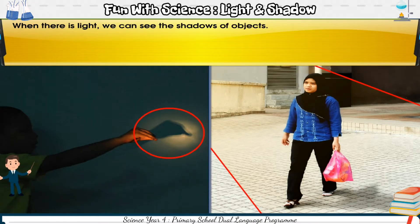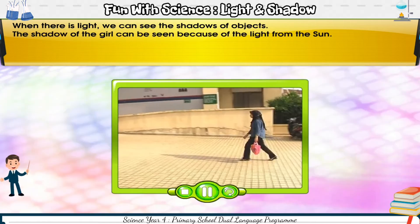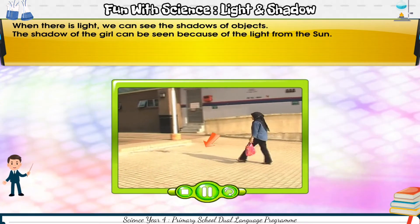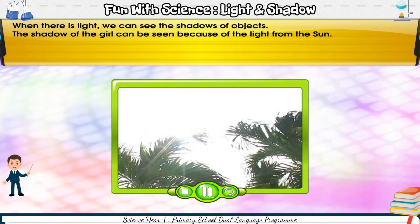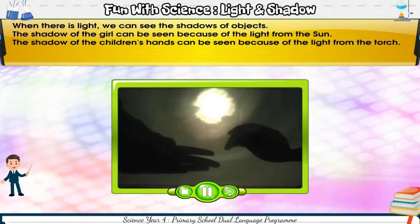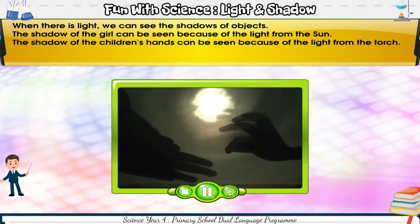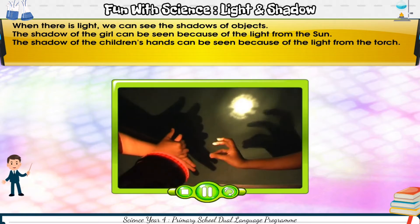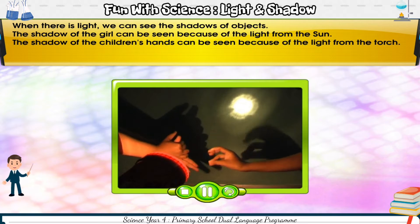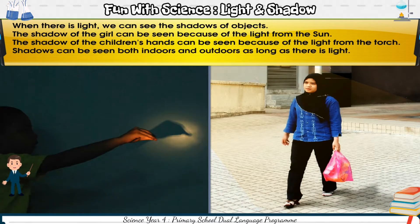When there is light, we can see the shadows of objects. The shadow of the girl can be seen because of the light from the sun. The shadow of the children's hands can be seen because of the light from the torch. Shadows can be seen both indoors and outdoors as long as there is light.